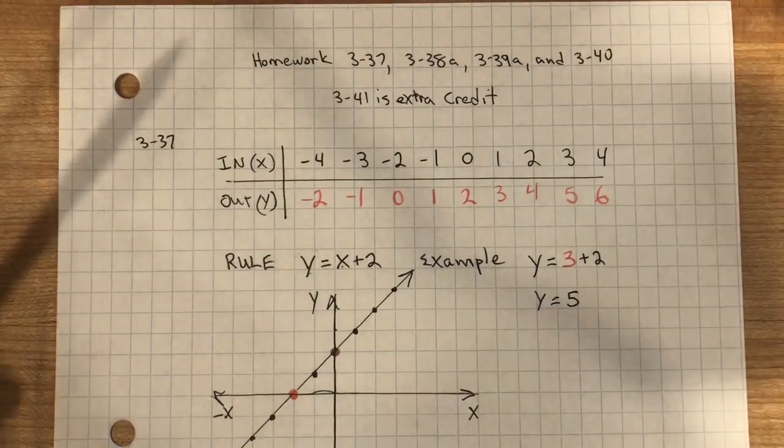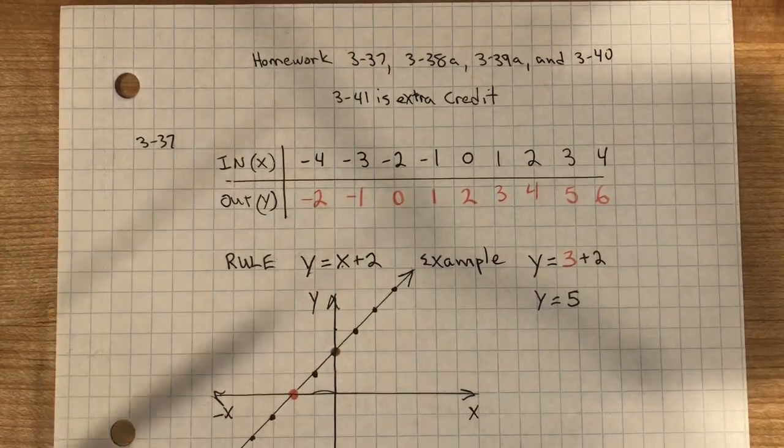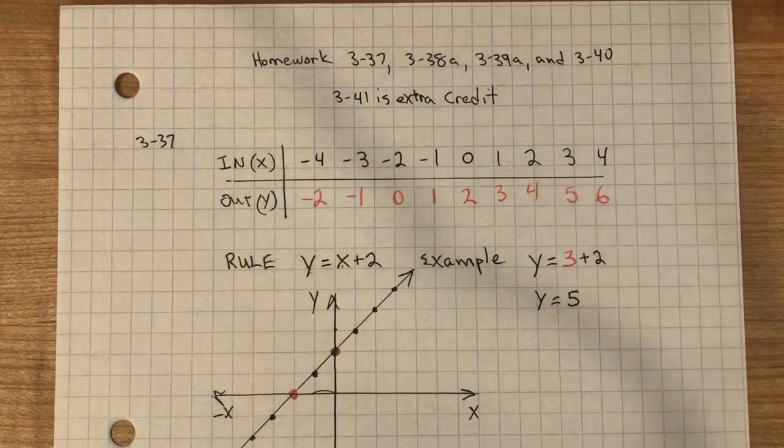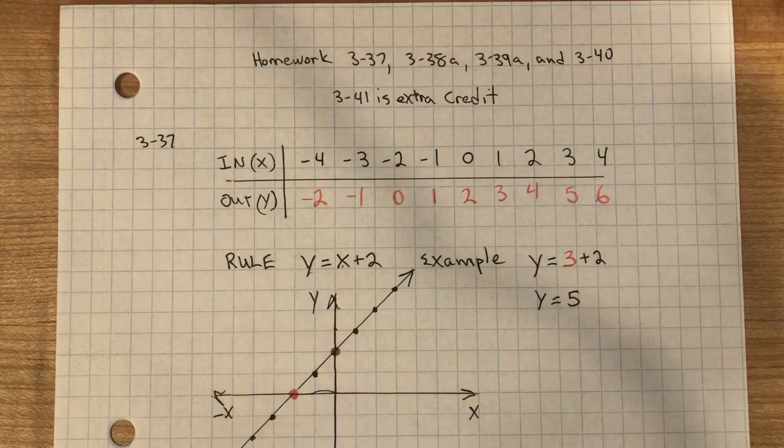This is the homework for 337, 338a, 339a, and 340. 341 is extra credit.